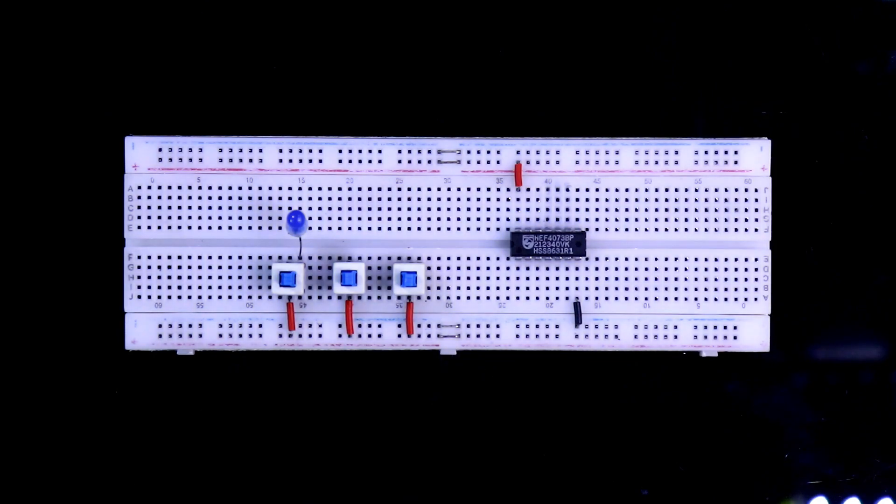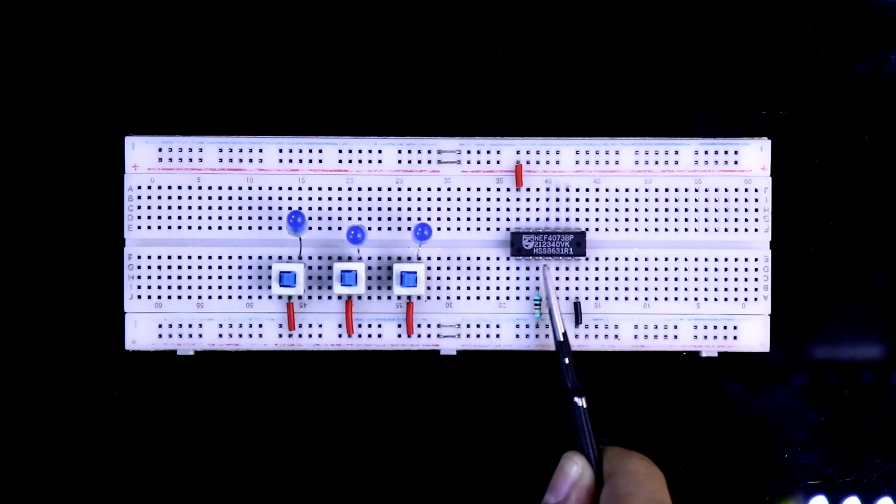Now putting the LEDs and the other side of the switches. Putting the pull-down resistors for gate 1. As we are connecting gate 1, pin numbers 3, 4, and 5 will be our inputs.